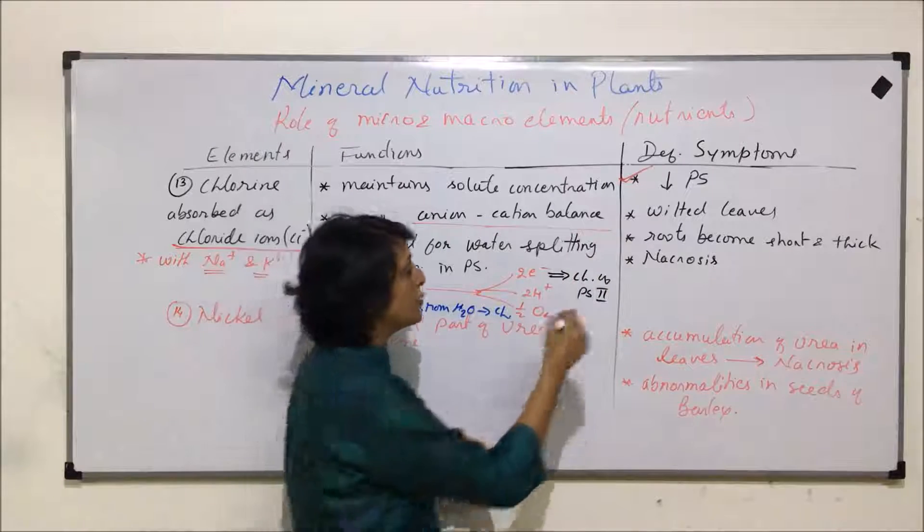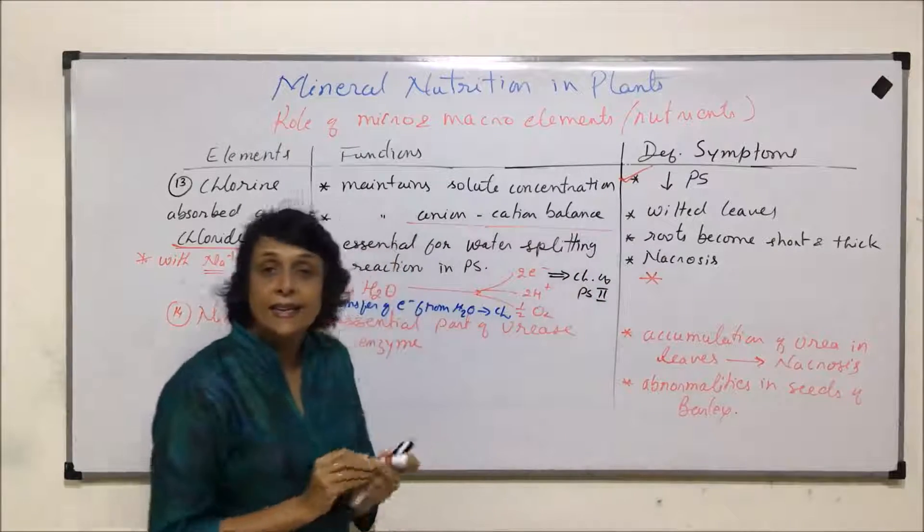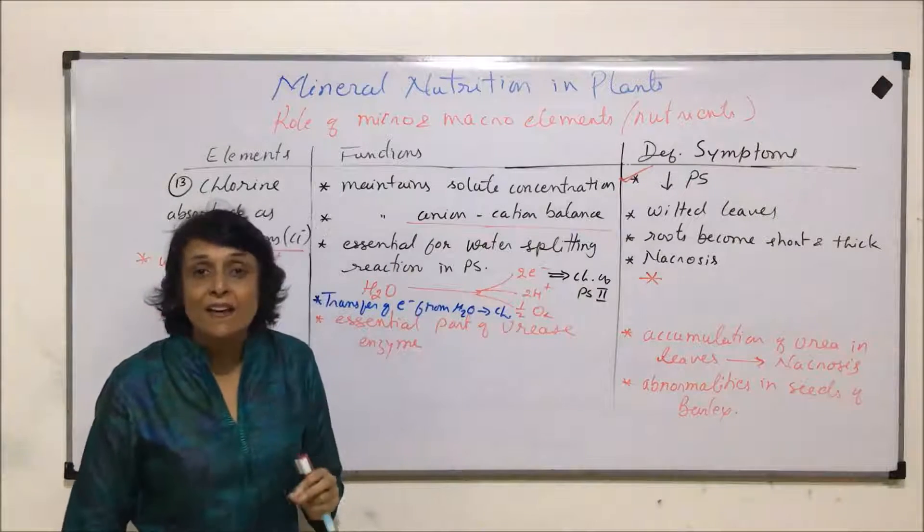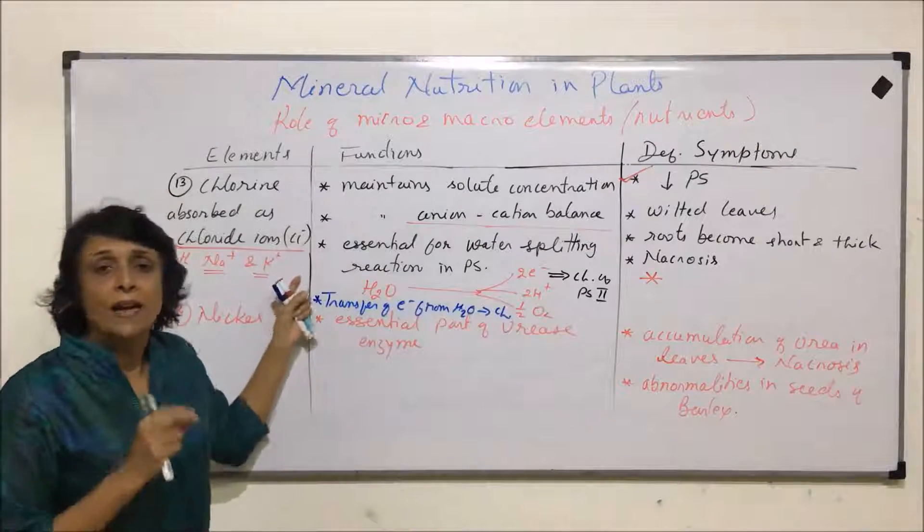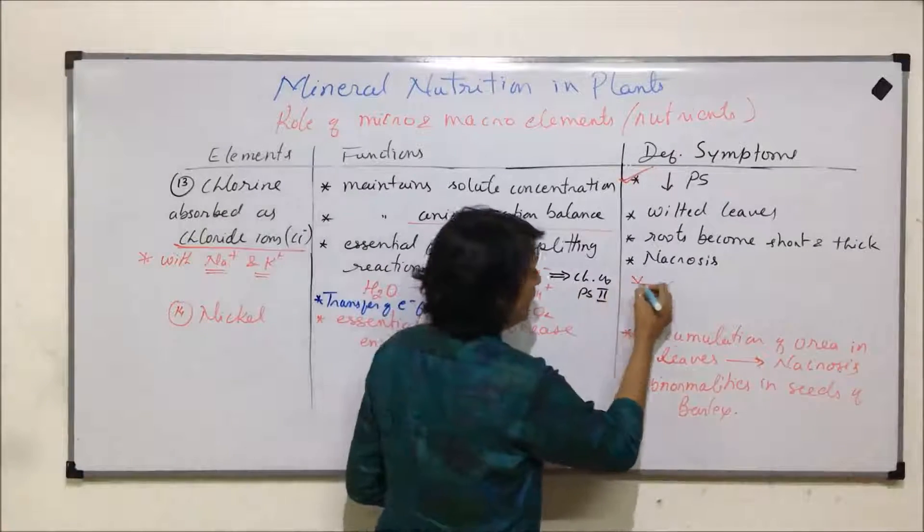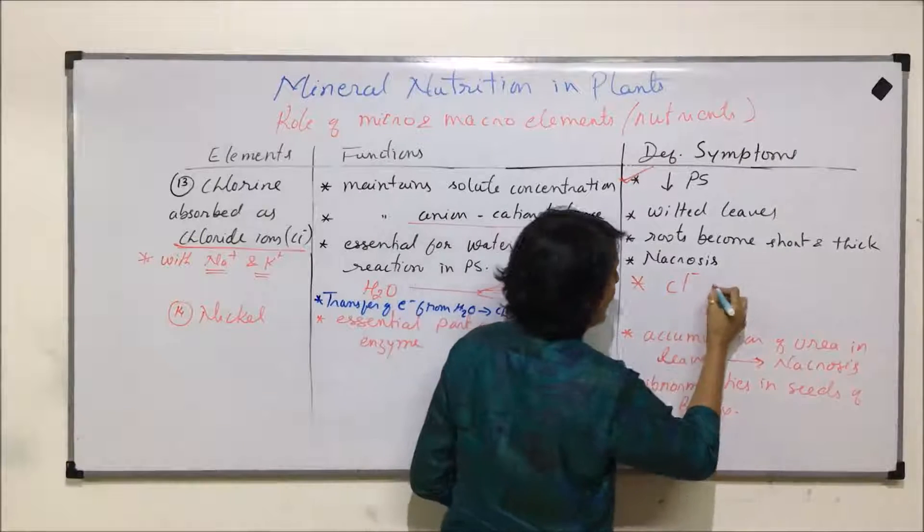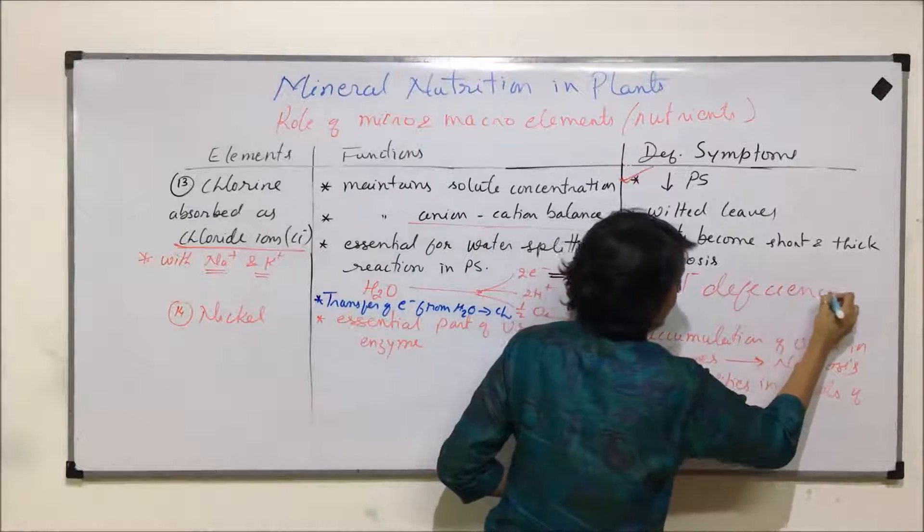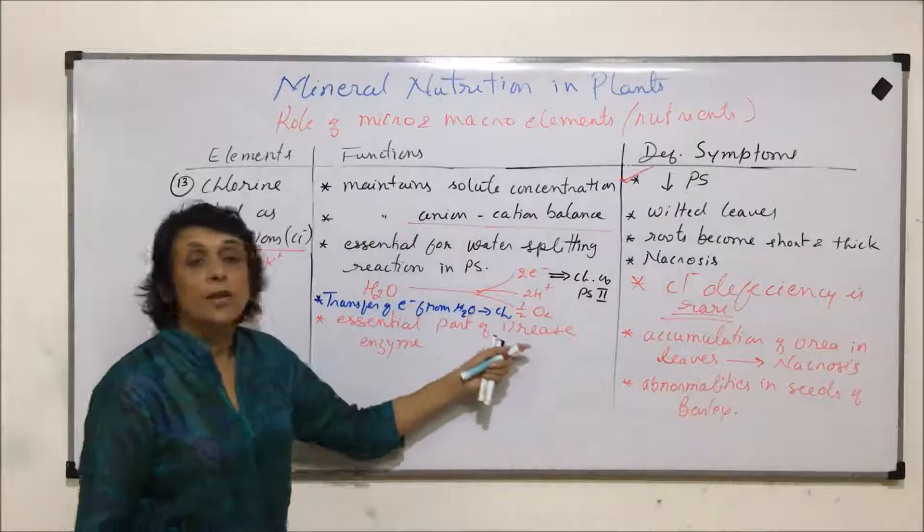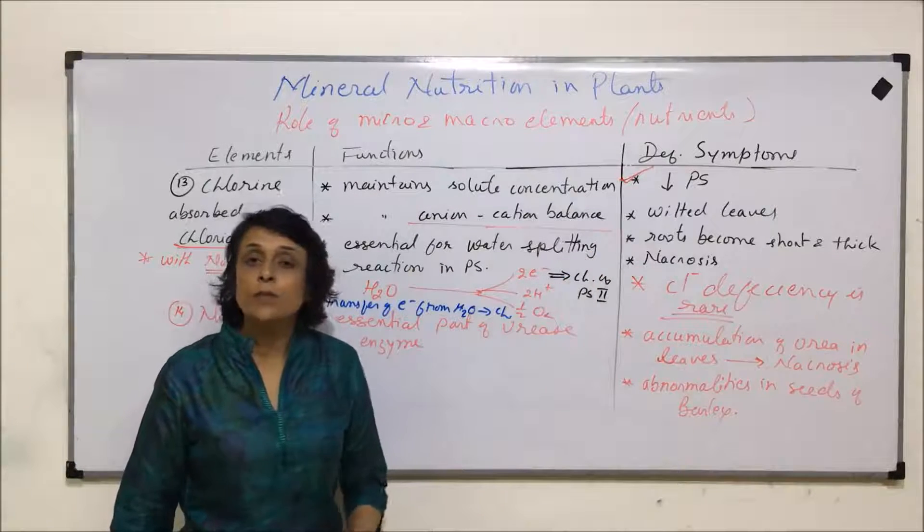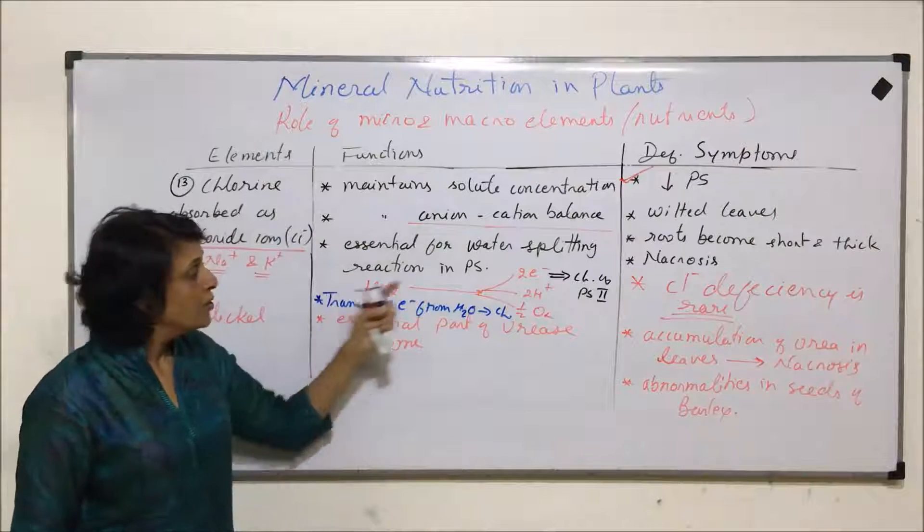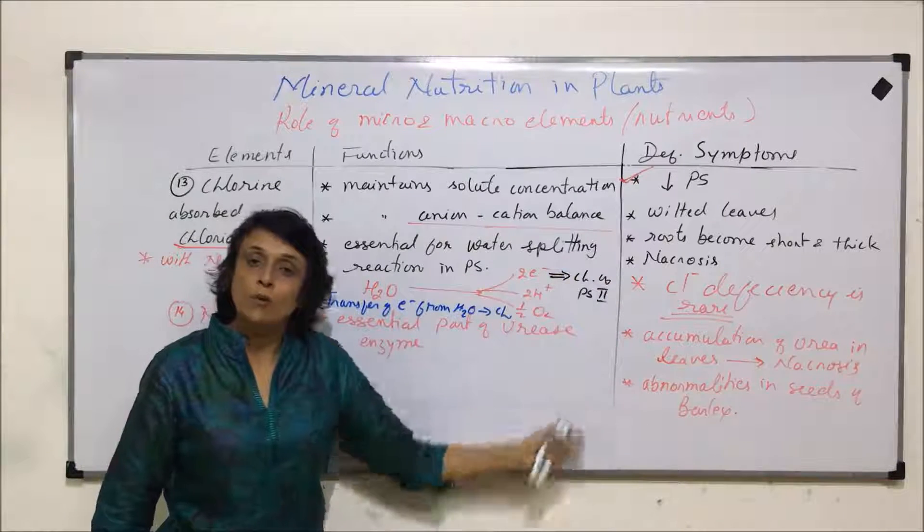One very important thing about chloride ions is that deficiency of chloride ions is very rare in nature. Reason: there are plenty of chloride salts which are present in the soil. Chloride deficiency is rare as there are plenty of these salts available. Scientists have found out these deficiency symptoms using hydroponics, because in soil chloride ions are always there. The technique of hydroponics was used to find out these deficiencies.